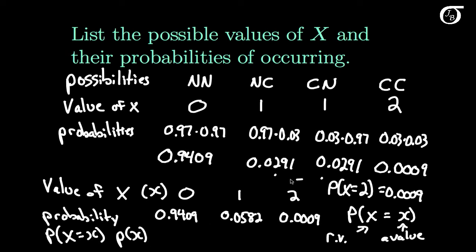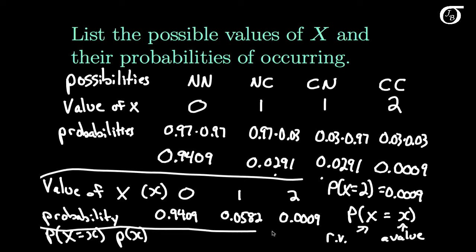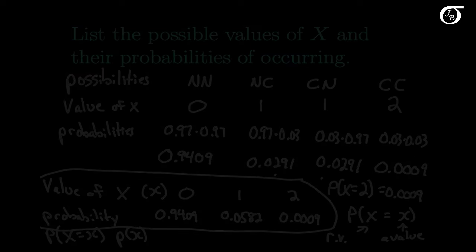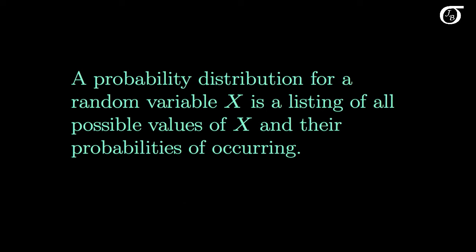What we have just done is created the probability distribution of our random variable X. A probability distribution for a random variable X is a listing of all possible values of X and their probabilities of occurring. This can be a listing like we had on the previous slide, or a formula, or some sort of graphic representation.